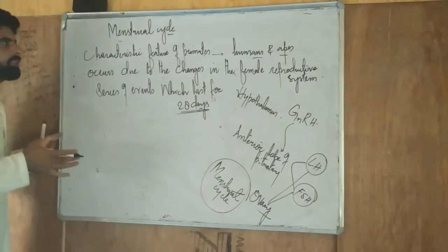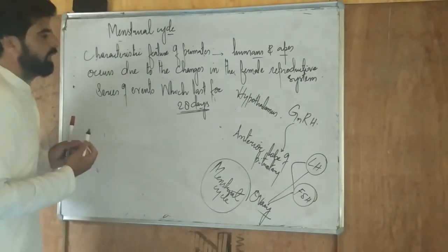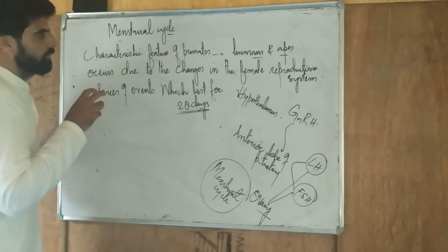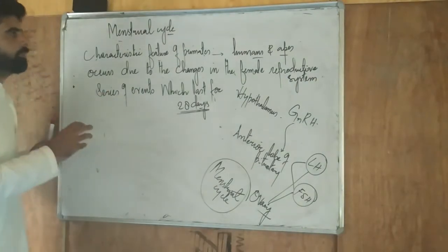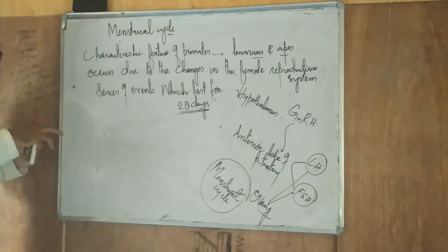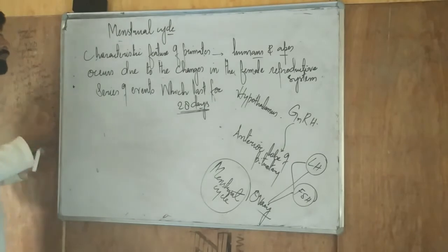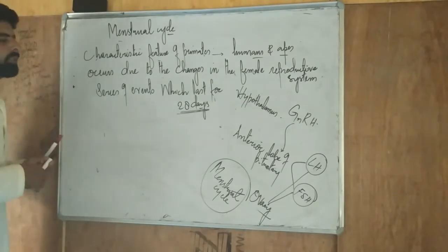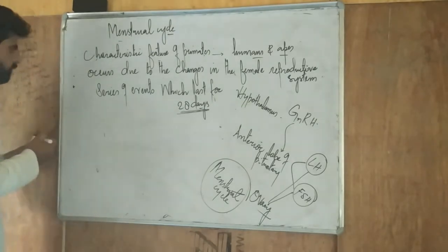It is a series of events: we have the first phase, then the ovulatory phase, then the luteal phase, and after that the onset of the cycle — that is known as the menstrual cycle.